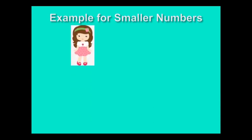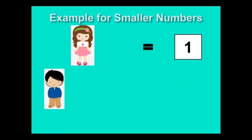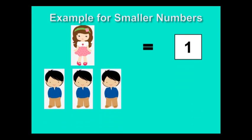1. There is one girl. 1, 2, 3. There are 3 boys. There is just one girl and 3 boys. So, the number 1 is a smaller number.